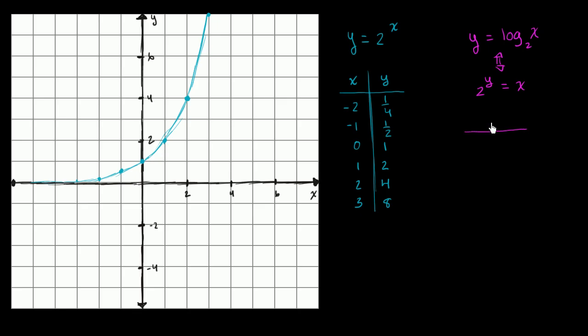So you've swapped the x's and the y's, and what we will see is that we can essentially swap these two columns. So x and y: 1 fourth, 1 half, 1, 2, 4, and 8.